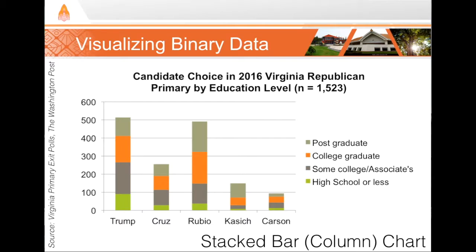Next, we can use a stacked bar chart. A stacked bar chart allows us to combine two types of data. Here we're presenting two different variables: voter preference shown along the bottom with total votes in the full bar, and secondly, the breakdown of each candidate's voters based on their education level, shown in different colors.